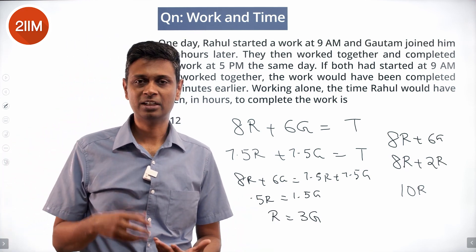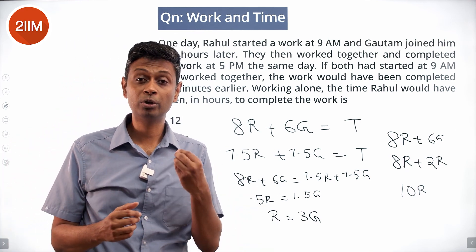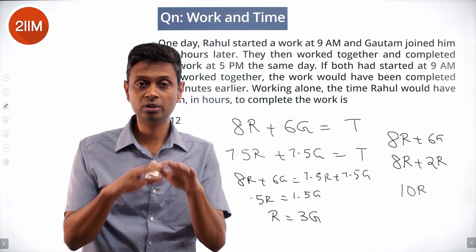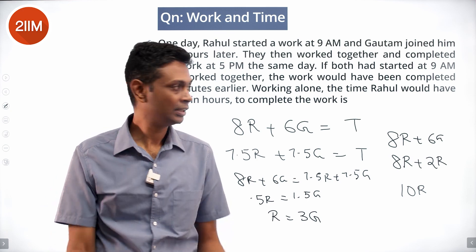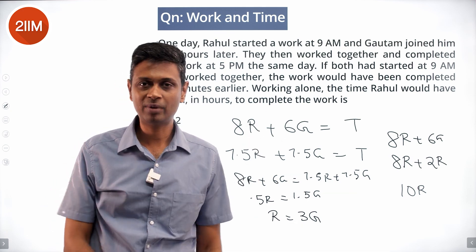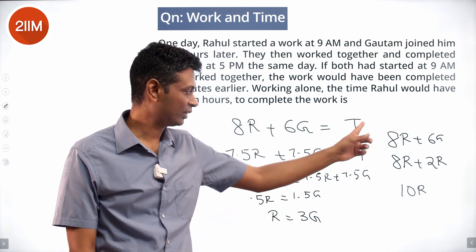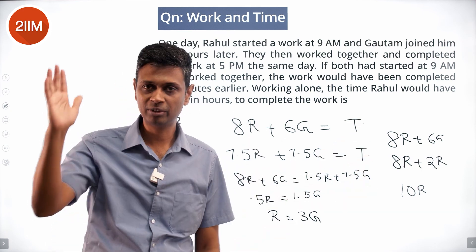This is a very routine question — simply find the number of hours, calculate the total output, and equate it to whatever the task requires.